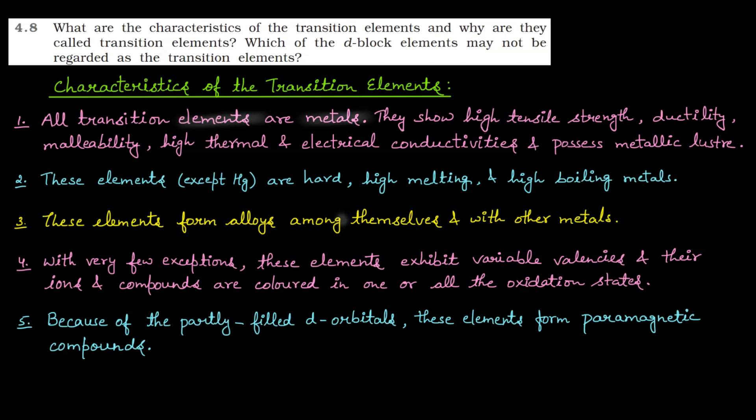All transition elements are metals. They show high tensile strength, ductility, malleability, high thermal and electrical conductivities and possess metallic lustre. These all properties are what metals show. Metals have high tensile strength, you can create wires and hammer them to convert them into sheets. They're thermal conductors, electrical conductors and metallic lustre means all these elements are lustrous, shiny.